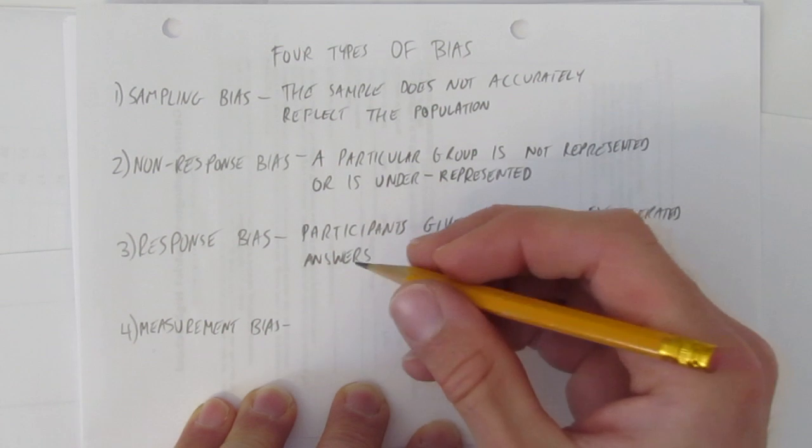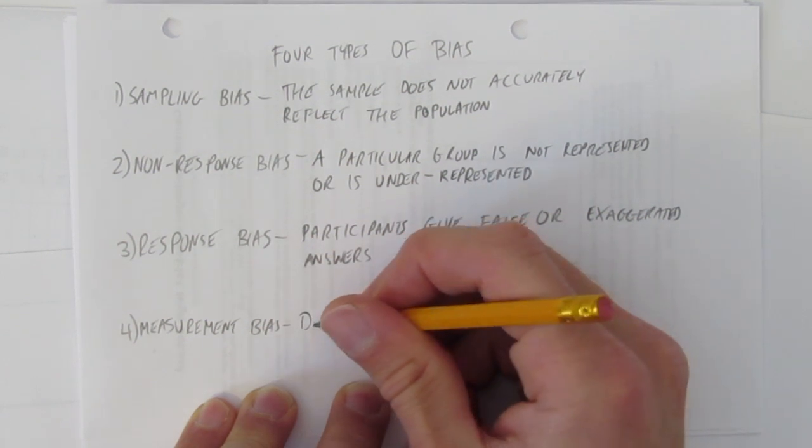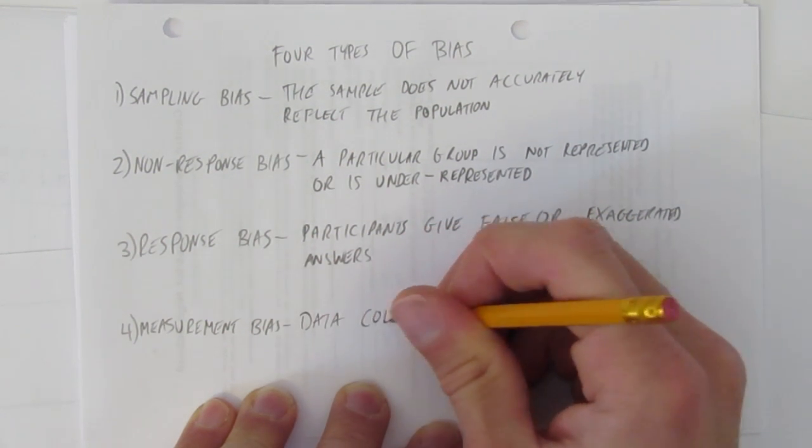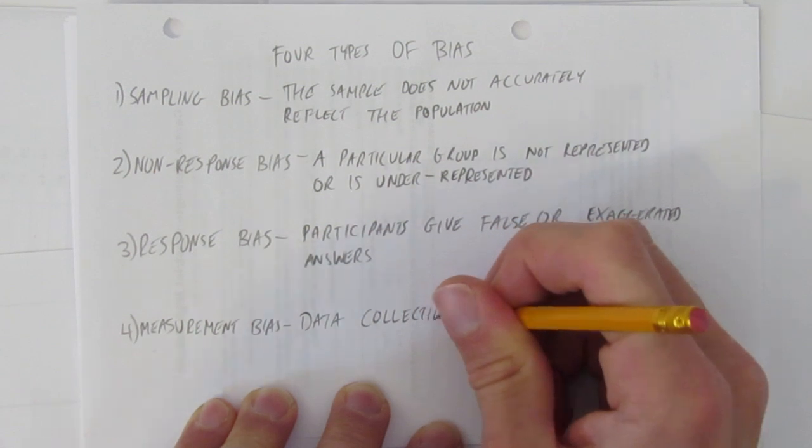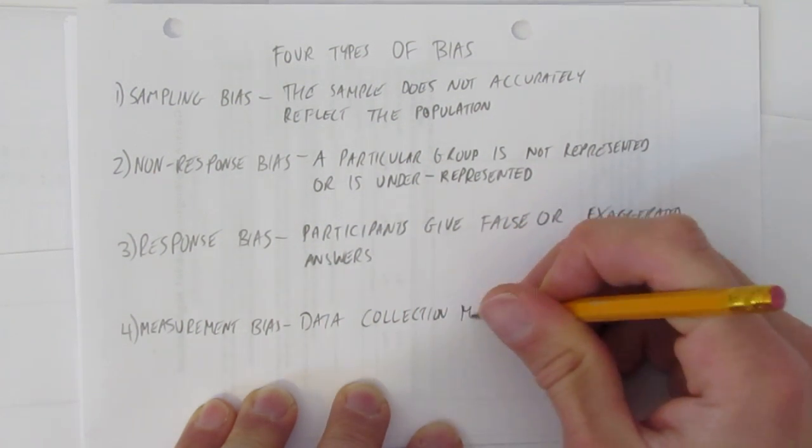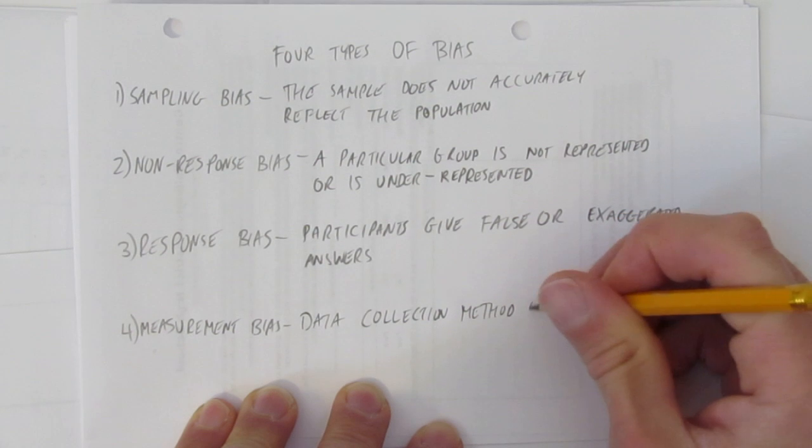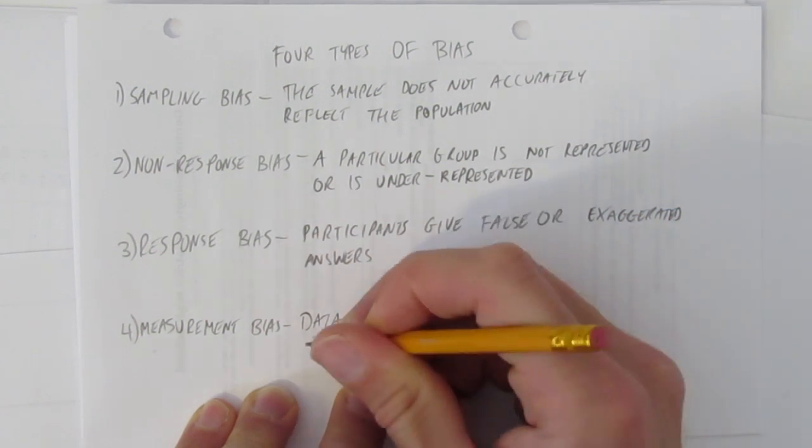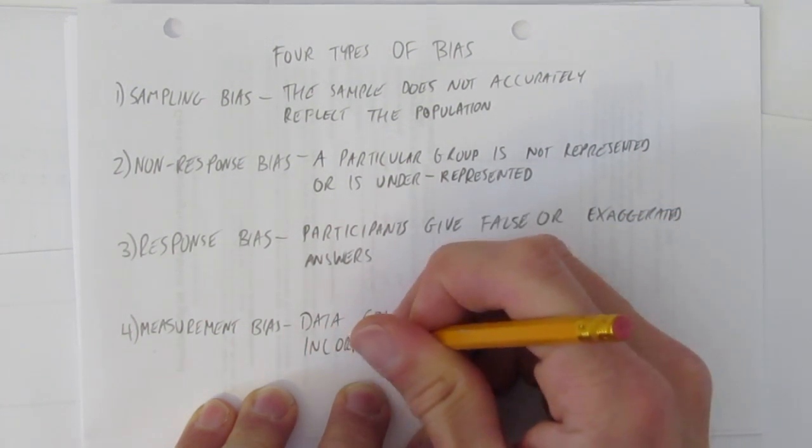The last type of bias is measurement bias. Measurement bias is when the data collection method gives incorrect results.